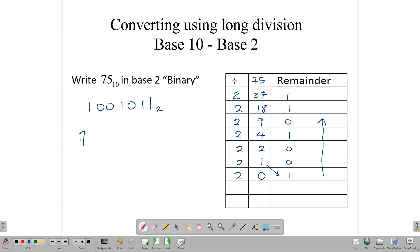And what we're saying is 75 in base 10 is the same thing as 1001011 in base 2. That is a process that we use to convert from base 10 to any other base.